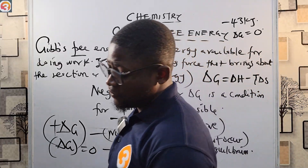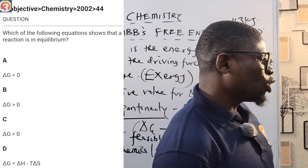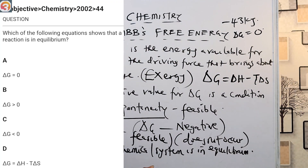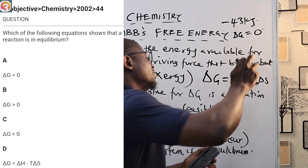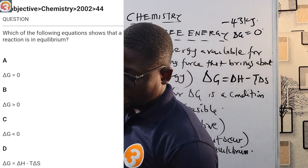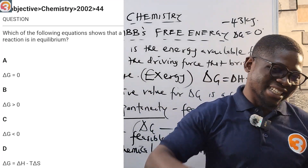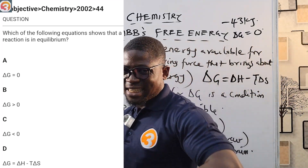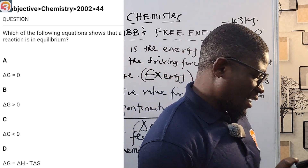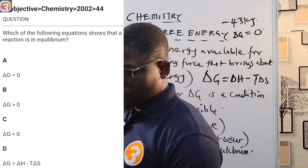This is 2002 question number 44: which of the following equations shows that a reaction is in equilibrium? For equilibrium, ΔG equals zero. Option A says ΔG = 0, which is correct. Option B says ΔG > 0, option C says ΔG < 0, and option D gives the formula ΔG = ΔH − TΔS. The correct answer is A.